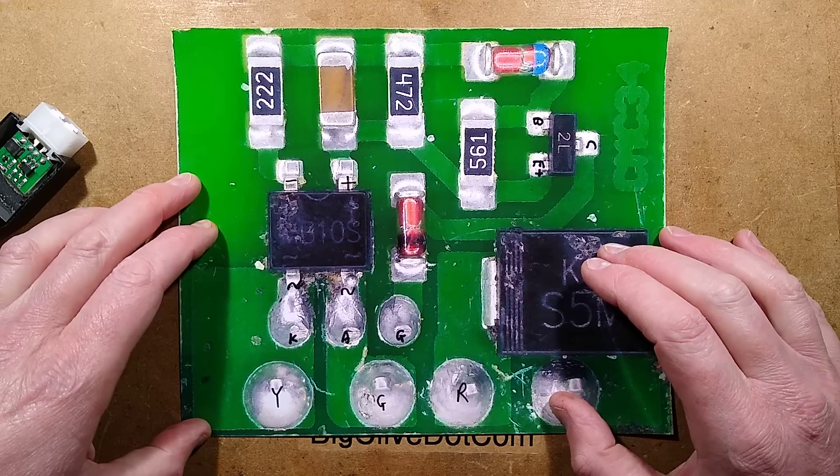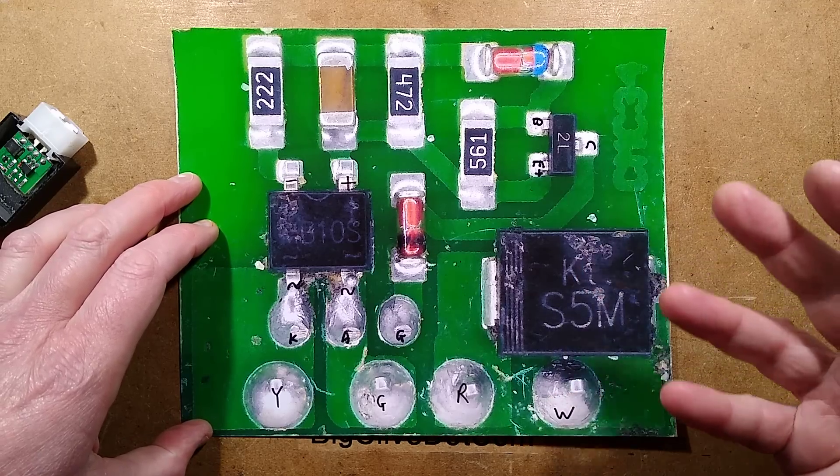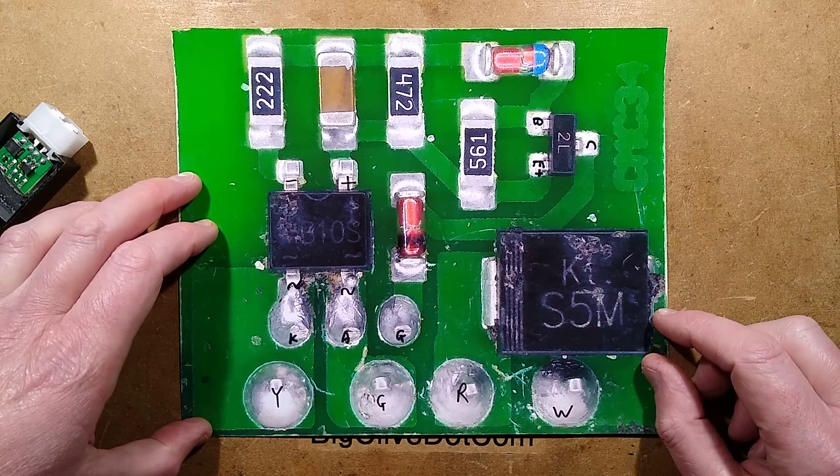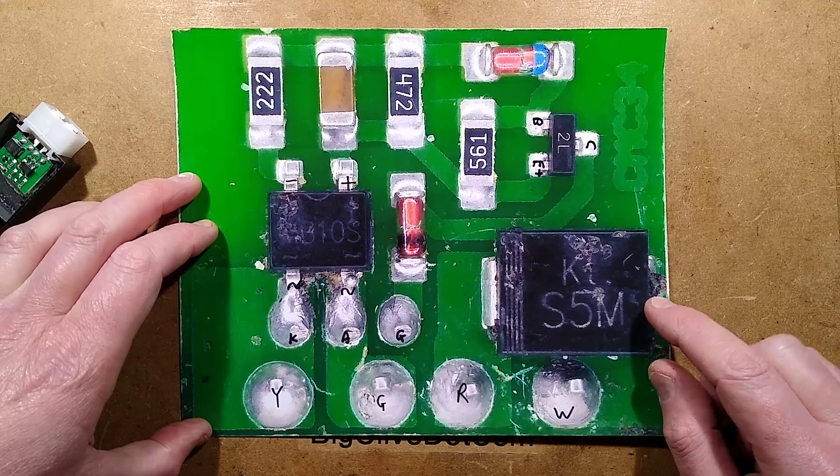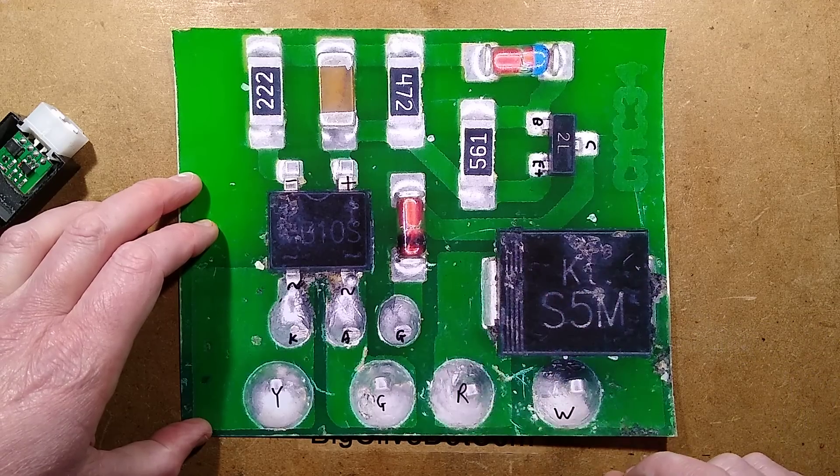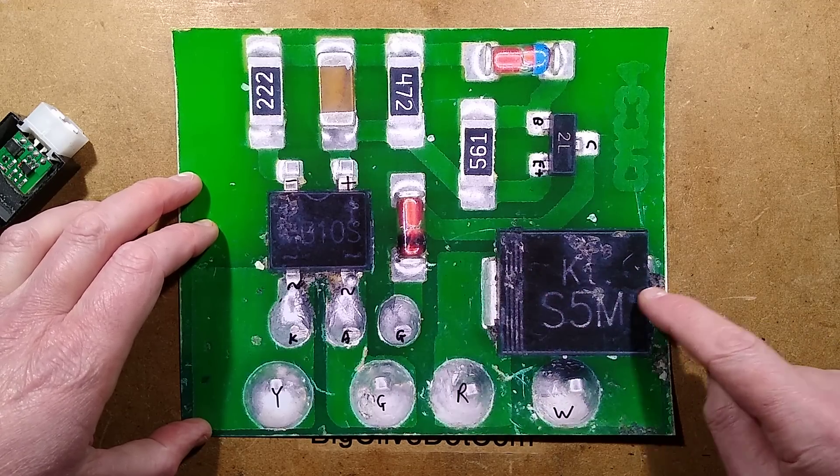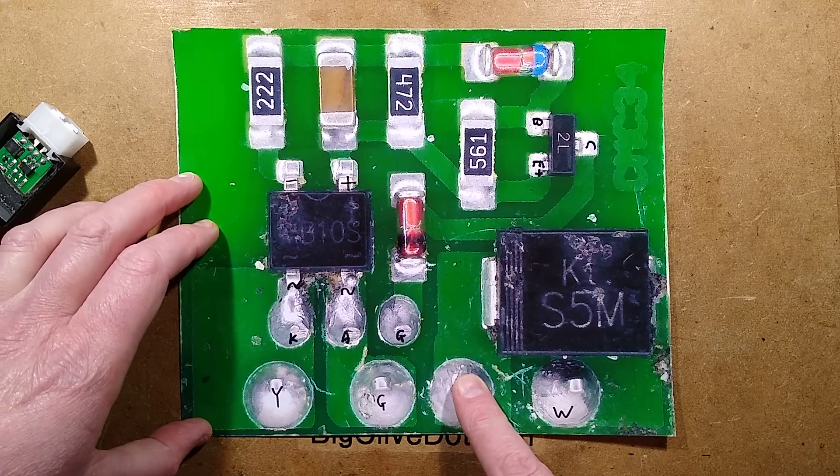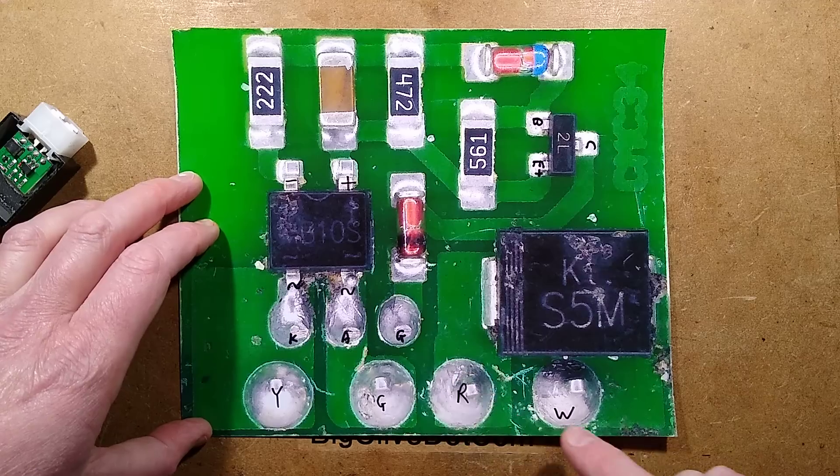If you thought there was going to be some sophisticated battery charge protection to avoid overvolting the battery and burning it up, you'll be disappointed. The entire battery charge circuit is just the white wire going through a diode to the battery. That is it. So keep a spare battery - you may need it on long trips.